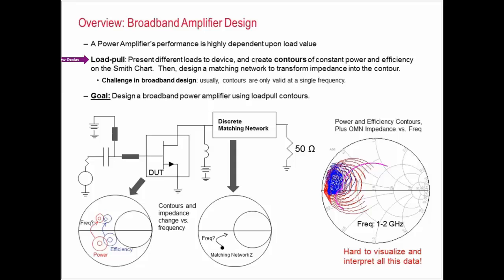So the contours, all the circles themselves or the ellipses, all have the same value of performance. Every point on that circle has the same value of power or efficiency or whatever. The goal is to design a matching network which will transform the system impedance into that particular contour that you're trying to target.